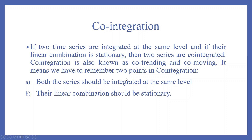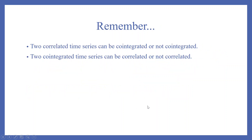It means we have to remember two points in co-integration: both series should be integrated at the same level, and the linear combination should be stationary. Remember, two correlated time series can be co-integrated or not co-integrated. Two co-integrated time series can be correlated or not correlated.